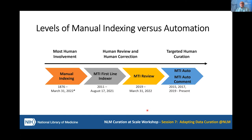To give a frame of reference, this is a scale from the left — the most human involvement, which is manually indexing — to the right, which is fully automatic MTI. We have MTI as a first-line indexer, where MTI provided the initial indexing for an article and a human indexer would look at the full text and decide if they needed to add or remove anything. Then MTI review was where the human indexer looks at only the title and abstract, since MTI is only looking at title and abstract and not the full text. This was a way to determine whether MTI was doing well enough on a journal that we could move it into fully automatic indexing.